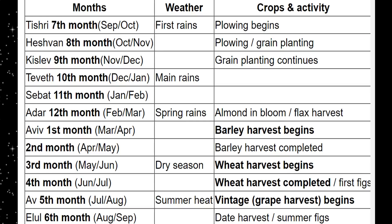Now look where the grapes and the figs come in. The Bible talks about the trampling of the grapes — that's during the summer heat. God lays it all out for us. The plan of God is right here.